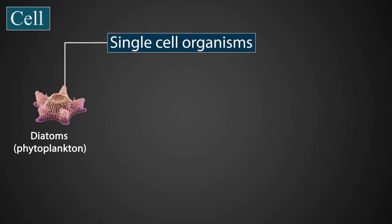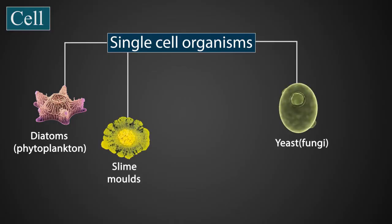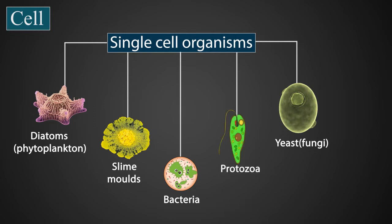Diatoms, also called phytoplankton, yeast, slime molds, bacteria, protozoa are all examples of unicellular organisms. We can't see them with our naked eyes; we can only see them with a microscope.